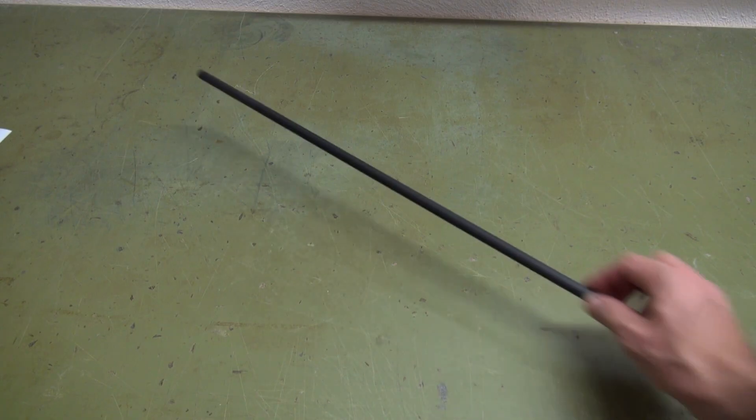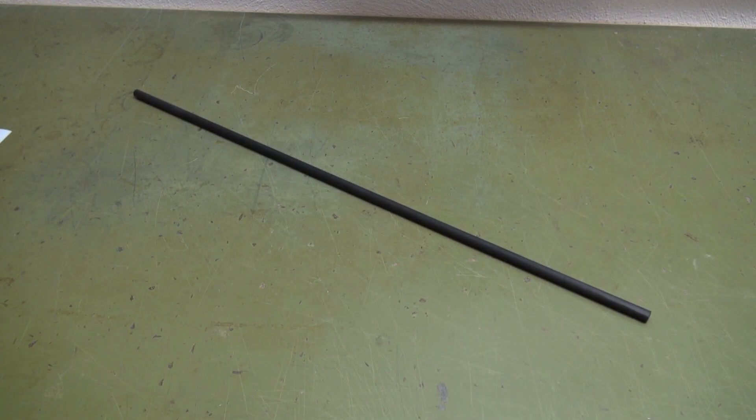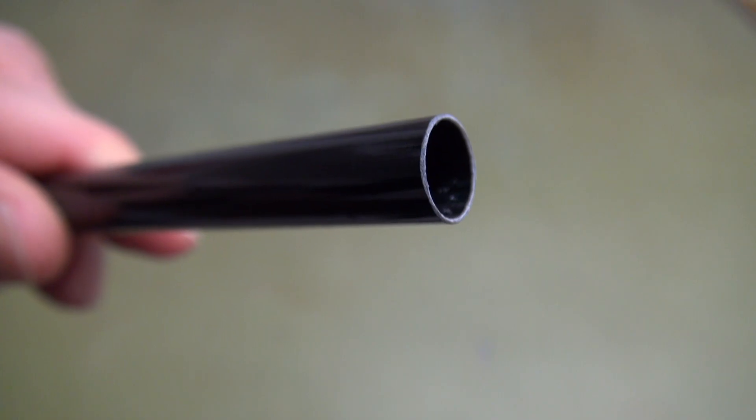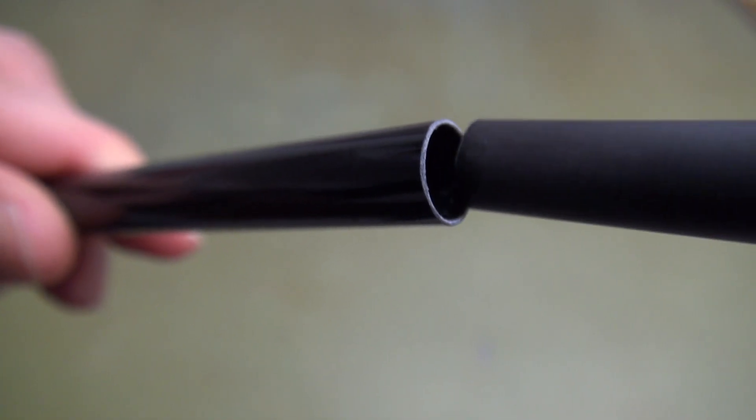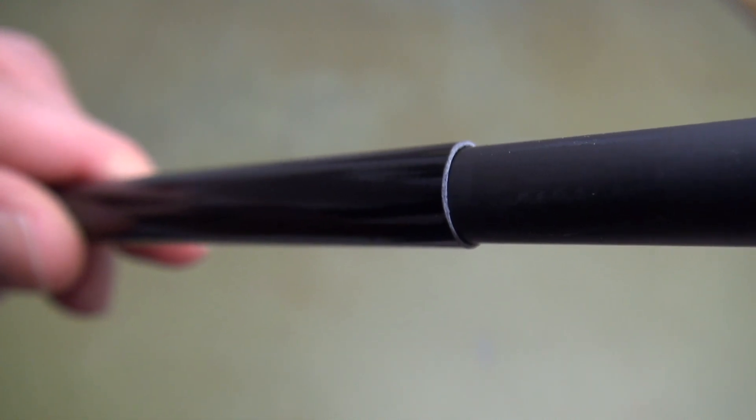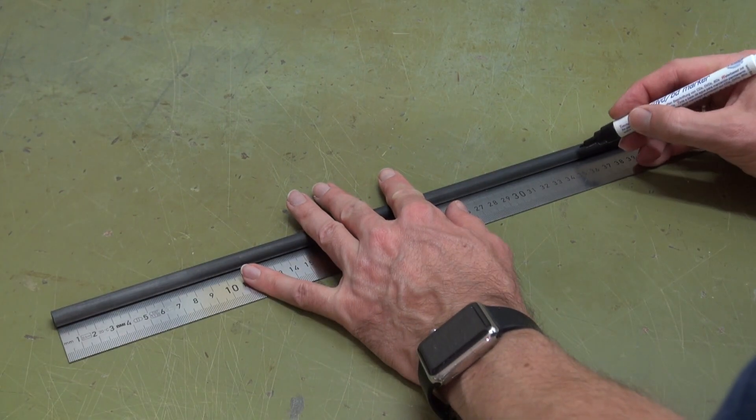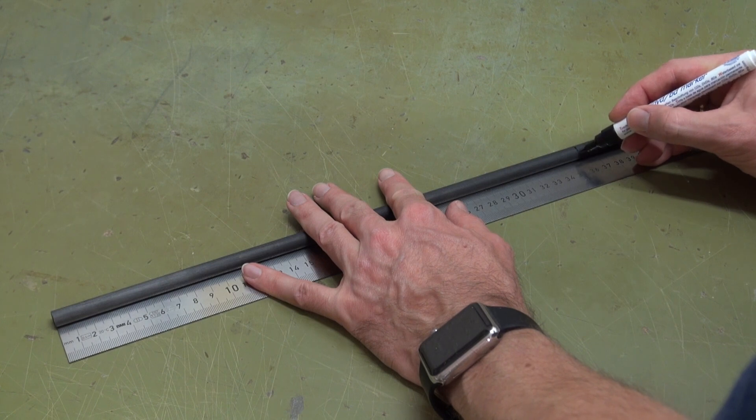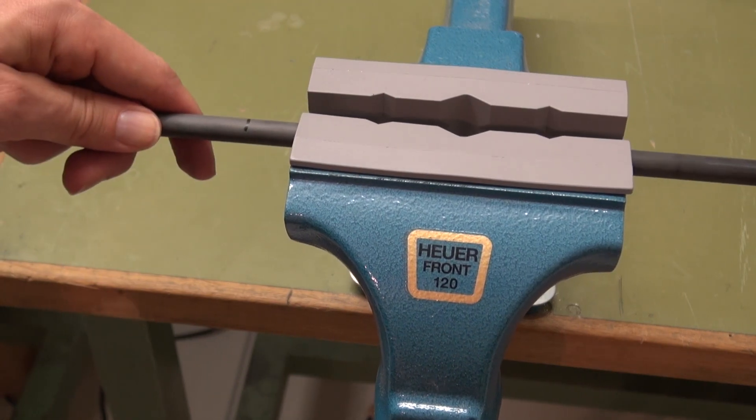Take the 10 by 8 millimeter carbon fiber tube. The one I use has a sanded outer diameter, which allows it to fit perfectly into the 11 by 10 millimeter fiberglass tubes installed in the fuselage. Mark the length of 355 millimeters and cut it carefully.